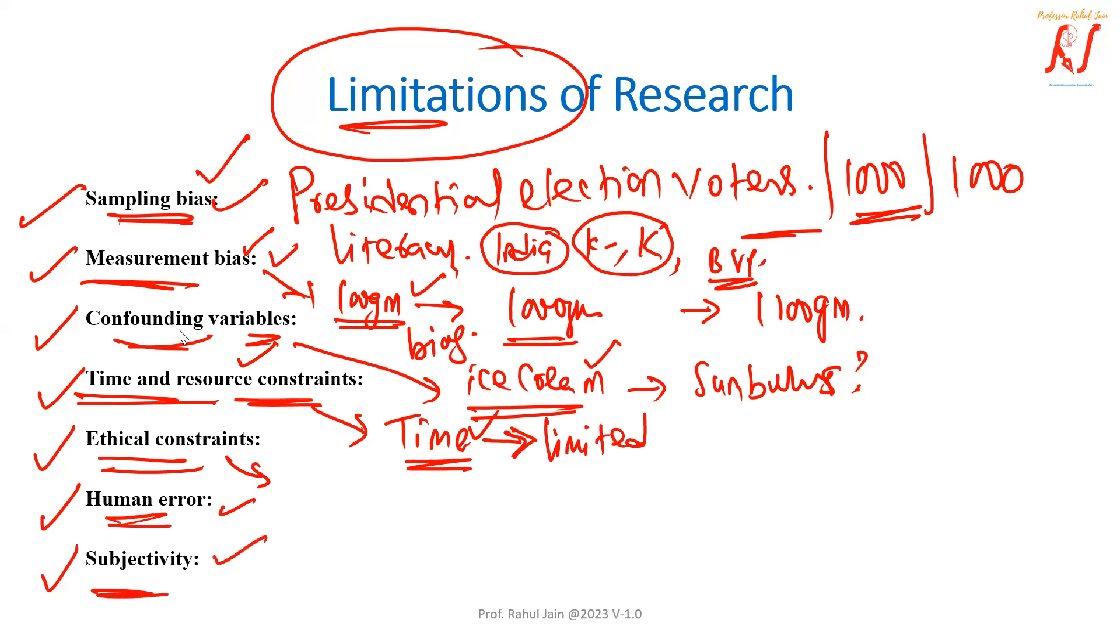And subjectivity, definitely research involves interpretation and subjective judgments. Because it is not necessary that a particular researcher's perception you can understand properly. Because a particular researcher's perception is unique property of that particular researcher, it does not mean that we can understand the exact 100% perception of that researcher. So subjective judgment can lead to different interpretation of the same data.